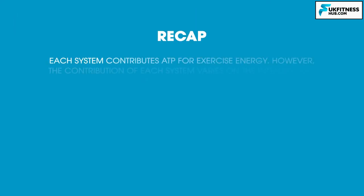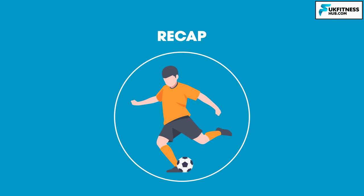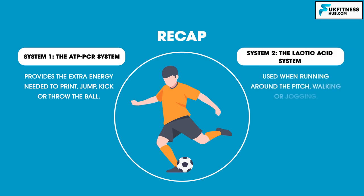At any given time, each system is contributing ATP for exercise energy. However, the contribution of each system varies on the intensity and duration of the activity. Take a football player as an example — they would use all three systems at different times. The ATP-PCR system provides the extra energy needed to sprint, jump, kick, or throw the ball. The lactic acid system would be used when running around the pitch, as footballers tend to run just below top speed, but there are periods of the game where they may be walking or jogging. You can see how these three energy systems interact and work with each other.